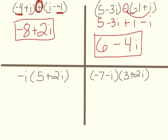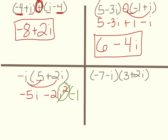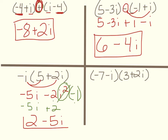Down here we have multiplication: negative i times 5 plus 2i. So of course you're going to distribute. We get negative 5i, and then minus 2i squared. But don't leave it as i squared — every time you see i squared, cross it out and write negative 1. So now we have negative 5i, and then negative 2 times negative 1 is plus 2. Since we always write real plus imaginary, your final answer is 2 minus 5i.